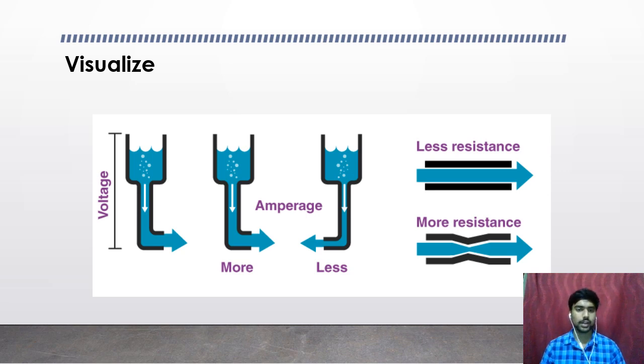Just like that even in electric circuit, when the voltage is high that is equivalent to pressure being high. If the voltage is high the flow of electrons will be high and the current will also increase. Similarly when the voltage is less it means the pressure will be less and the flow of electrons will also be less. Hence the current will be less. This model of water pipe allows us to understand the concept of flow of electrons and current better.